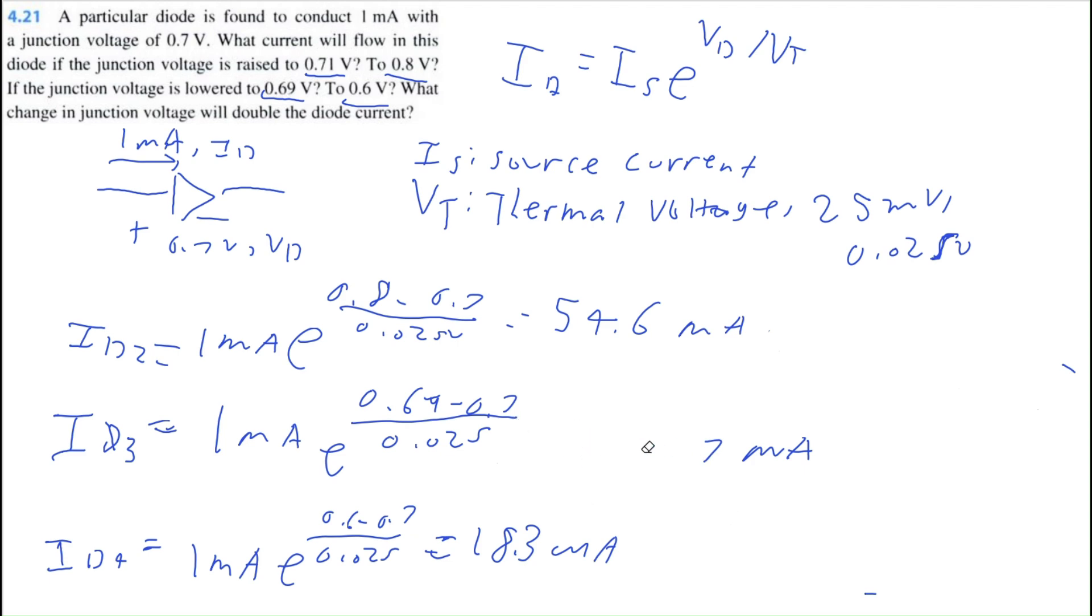And for the last part, what change in junction voltage will double the diode current? This is kind of just using algebraic expressions, but we can say our factor of increase is equal to E to the power of delta VD, where this is the change in voltage divided by our thermal voltage. So we want this to double, to increase by a factor of 2. We're just going to have 2 equals E to the power of delta VD divided by 0.025.